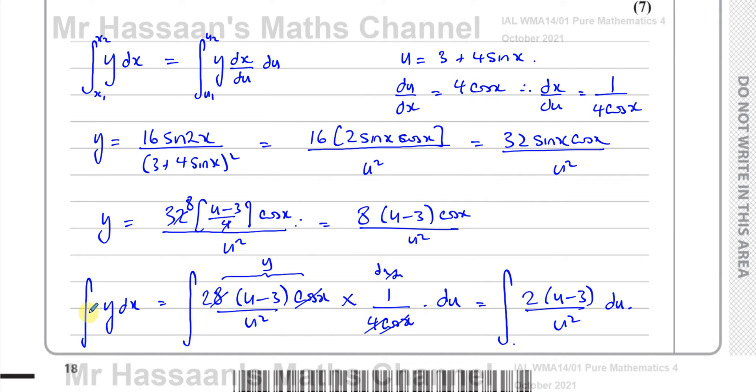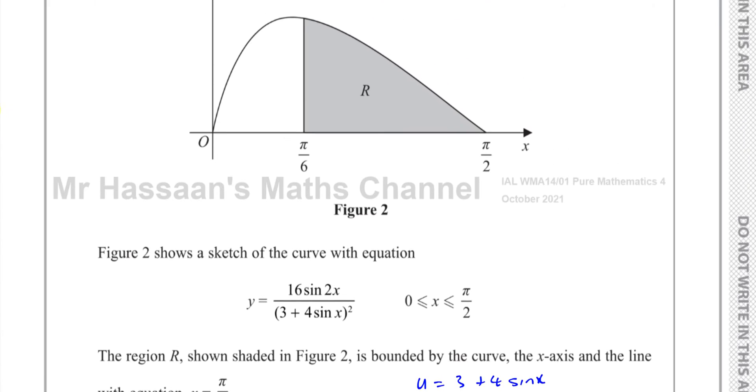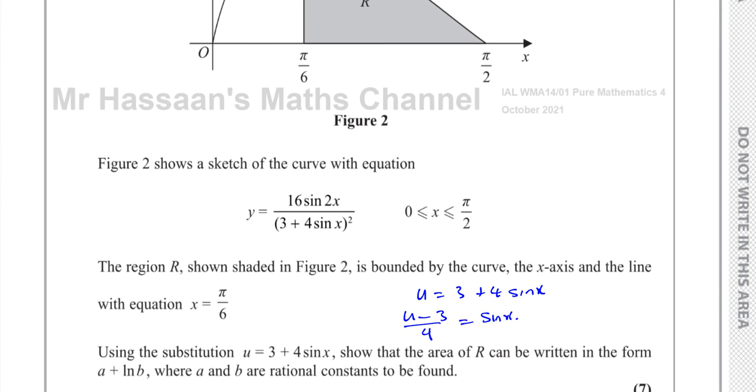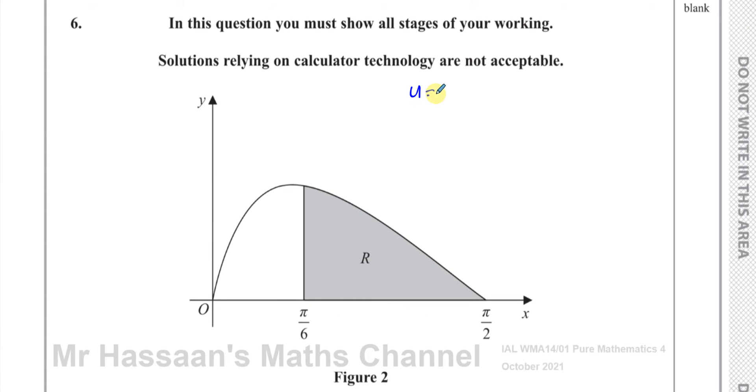This is x₁ and x₂, so let's find what u is. I know that u = 3 + 4sinx. I need to put the limits in for π/6. So when x = π/6, u = 3 + 4sin(π/6). That's like 30 degrees. 3 + 4 times a half. 3 + 2, which equals 5.